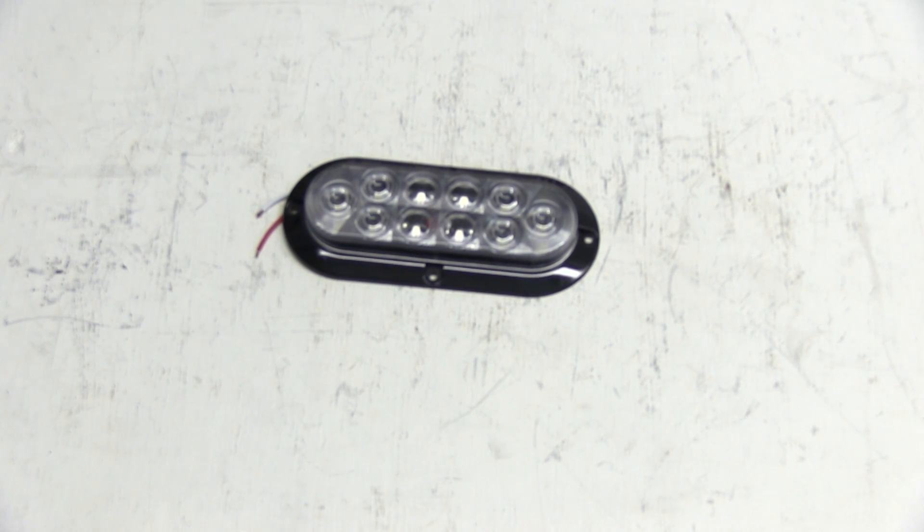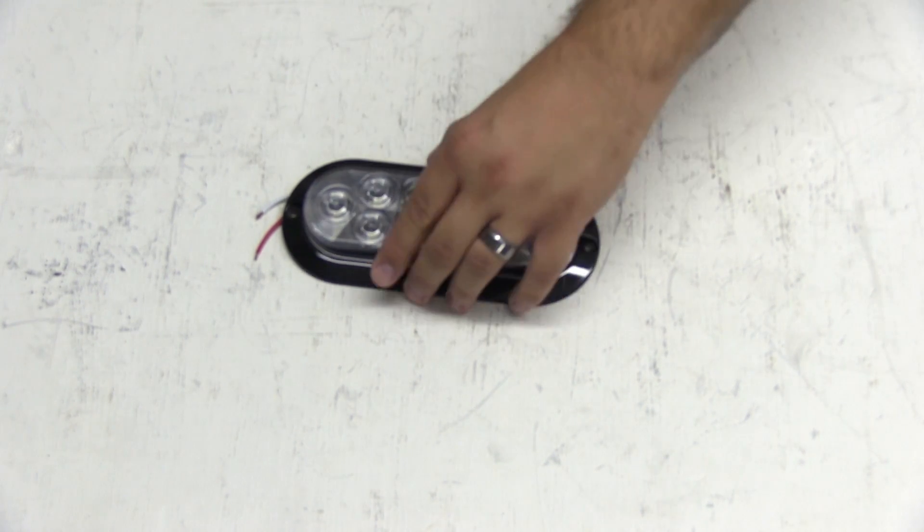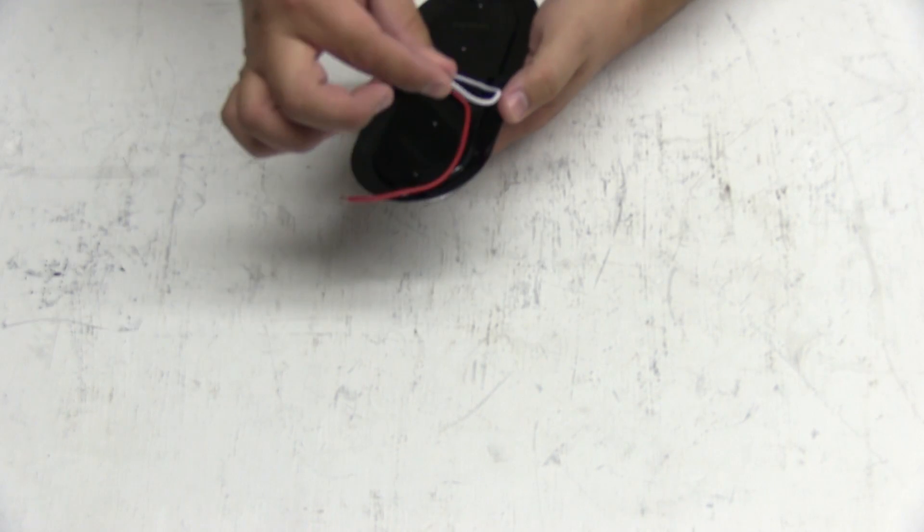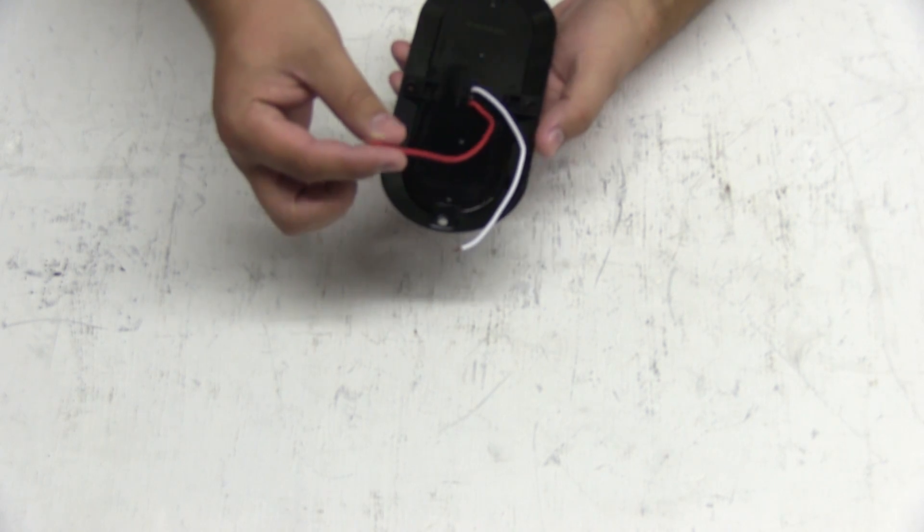This light housing is sealed and waterproof and contains 10 super LEDs. The LEDs draw a total of .080 amps at 12.8 volts. It's a two wire design meaning there will be one wire for ground and another wire for power.